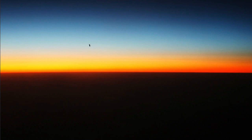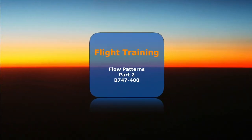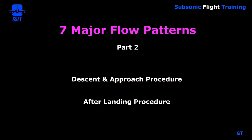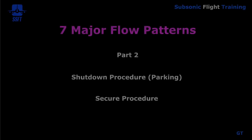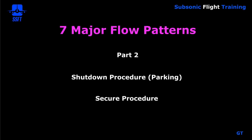Our briefing today will cover, under the category of flight training, flow patterns part two for the B747-400 PMDG. Part two will be airborne in cruise flight and we'll be setting up for the descent procedure followed by the descent checklist, then the approach procedure followed by the approach checklist in preparation for landing including approach briefing. Once we land and clear the runway we do our after landing procedure followed by the after landing checklist, then pulling into the gate, stopping the airplane, we do our shutdown procedure followed by the shutdown checklist, and if everybody's off the airplane and we desire to do so, we do the securing procedure followed by the securing checklist. So let's hop on over to the virtual simulator.